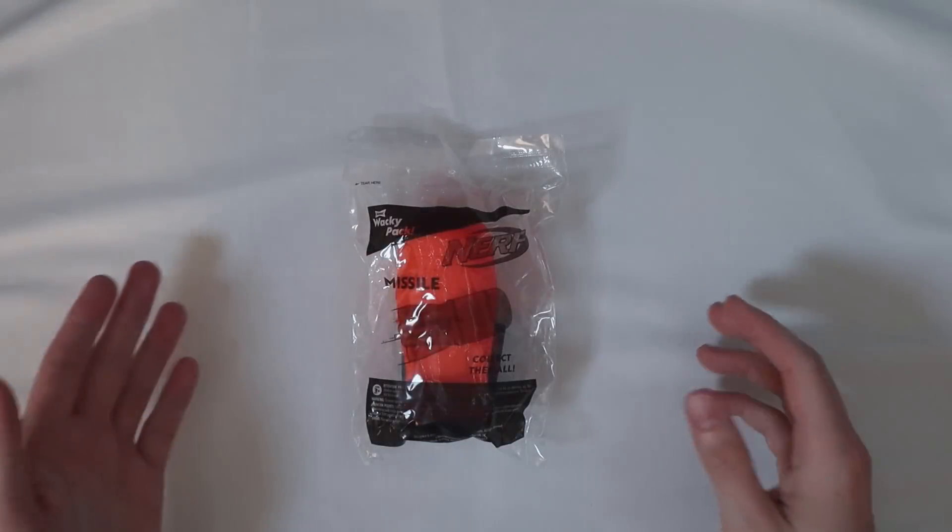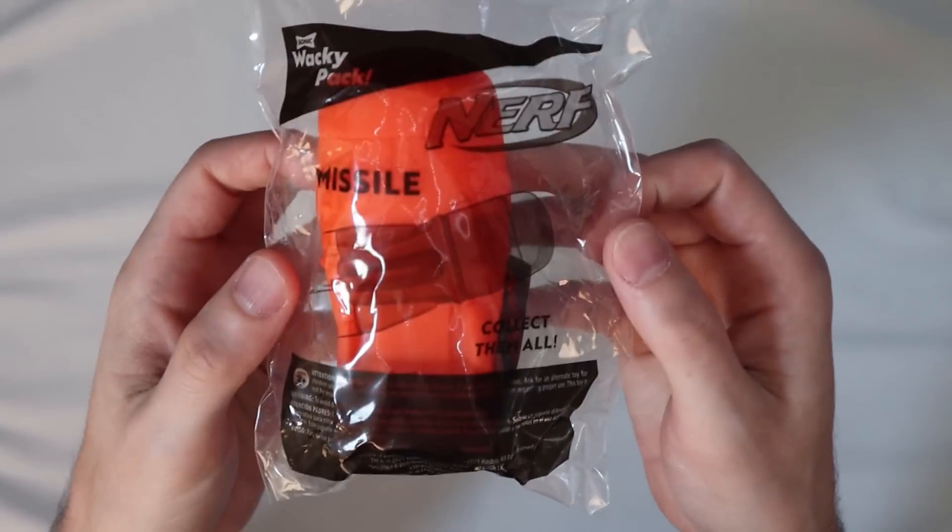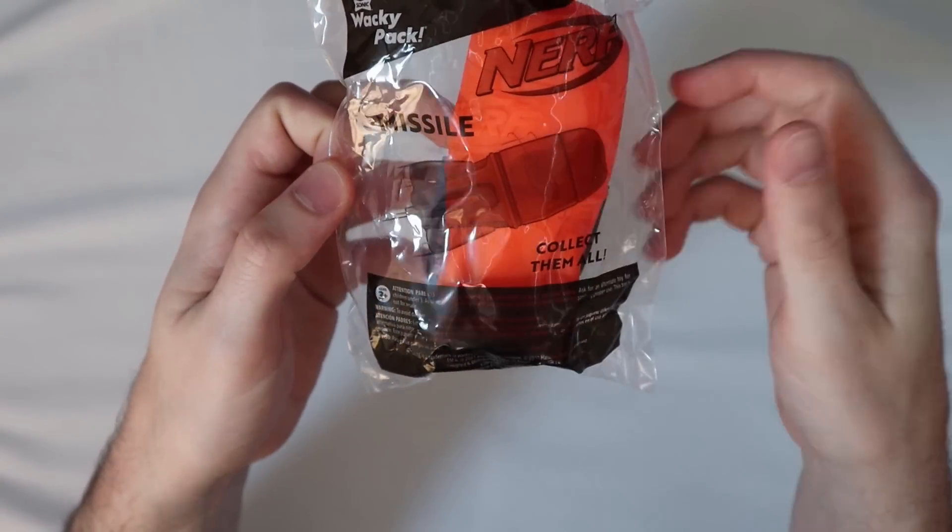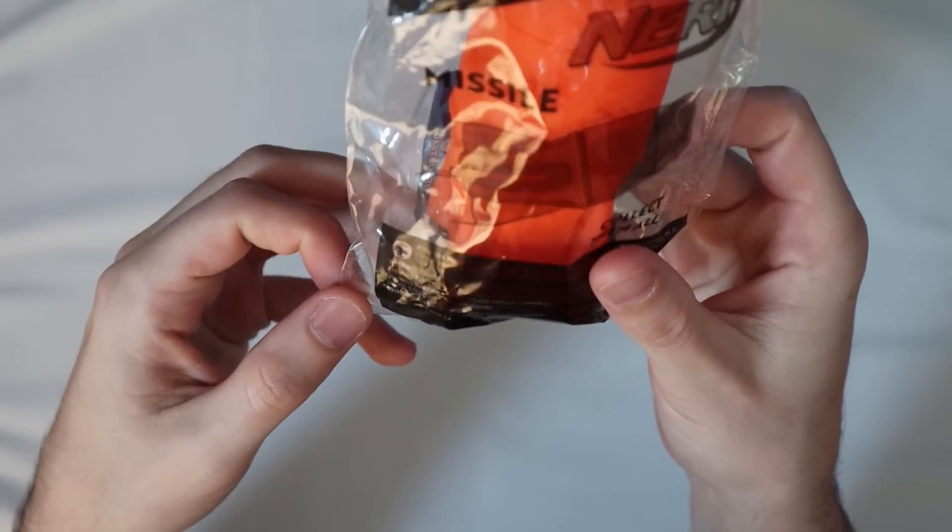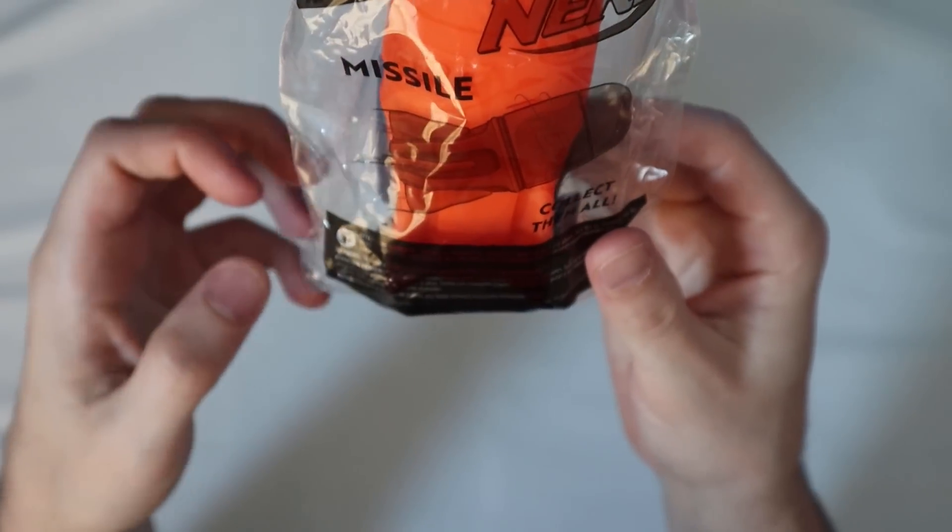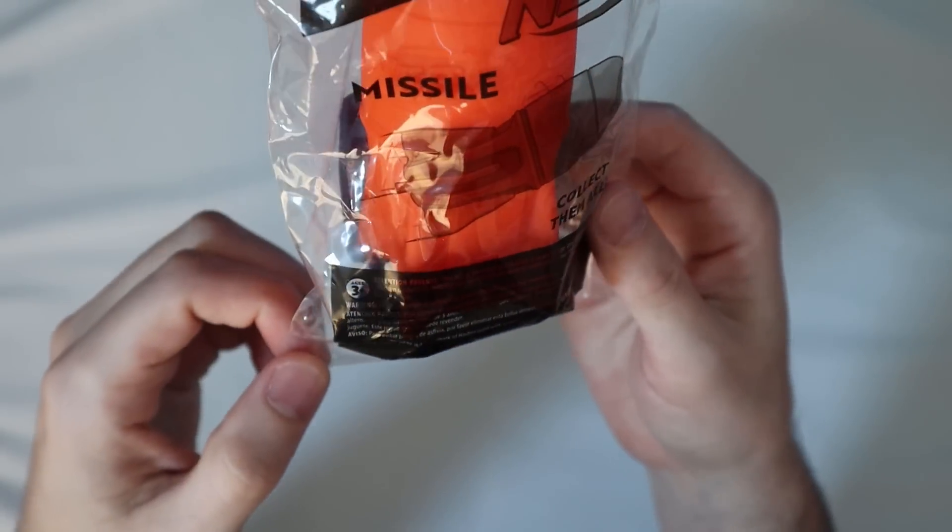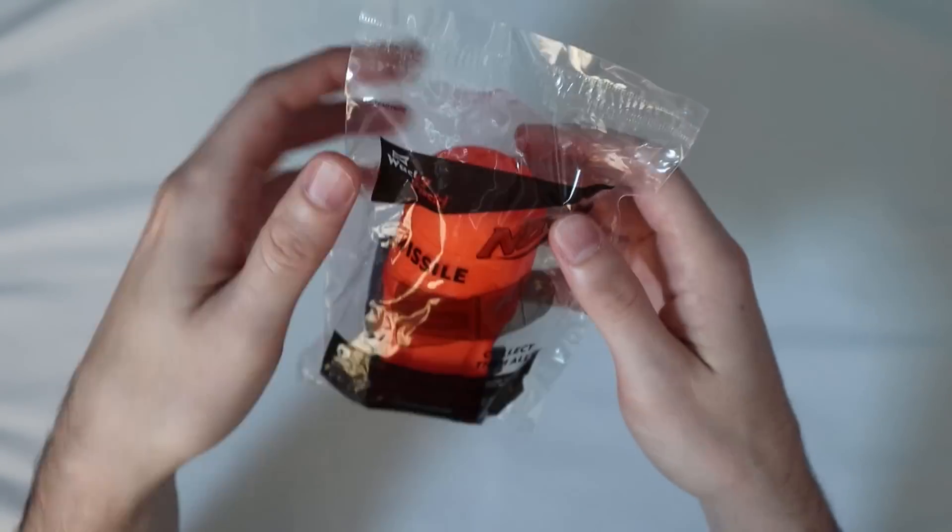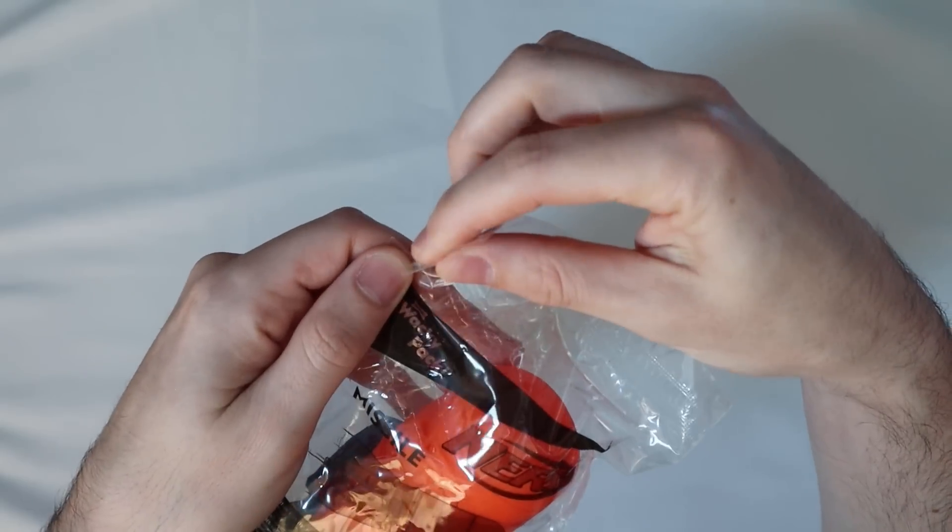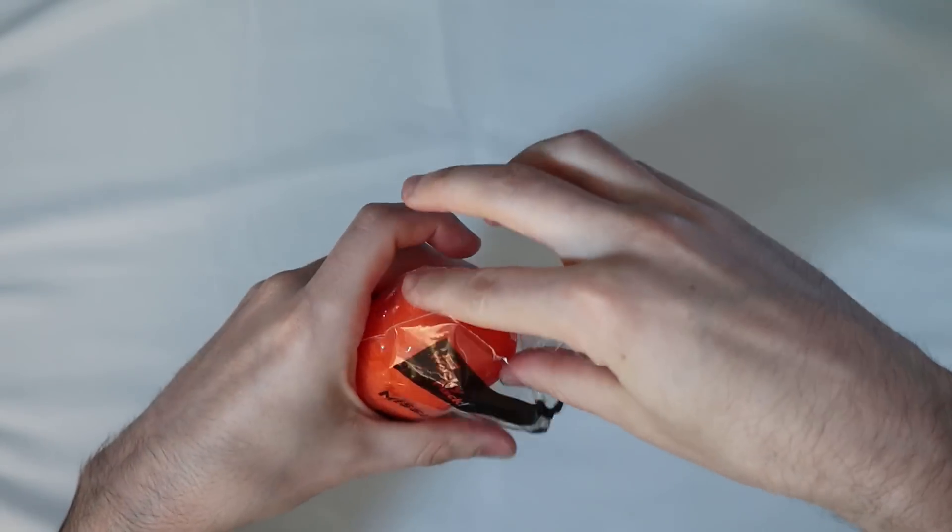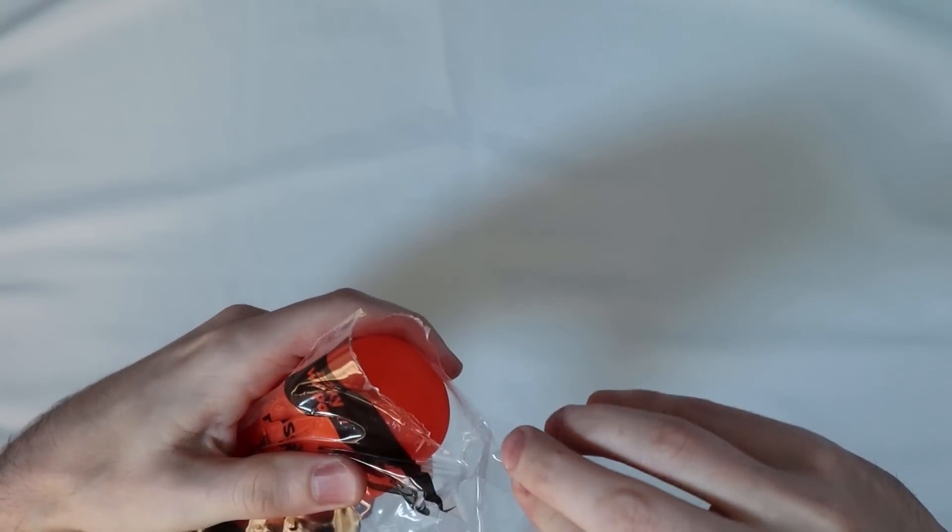All right, let's check them out. First one we're looking at is the missile. So we'll take a look at the packaging real quick. This is the same for pretty much all of them. It's got Nerf, Sonic, Wacky Pack, Collect Them All, missile. And at the bottom it says, Attention parents, this toy is intended for children three years of age and above. Oh my gosh, I don't know if I should be playing with this. But you know, the usual stuff. And here's the moment of truth. No going back. Tear here. Just tear it enough so I can take it out.